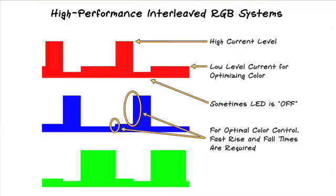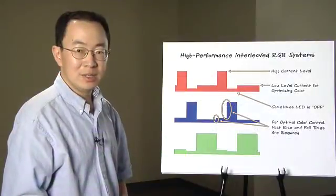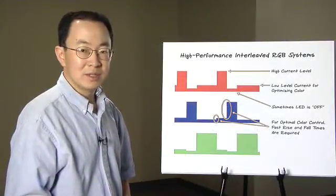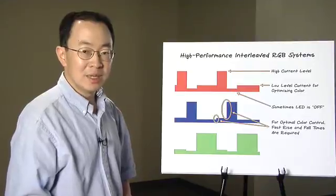In high-performance system, there is a low-level LED current in between off and high. In high-performance system, faster rise time and fall time are required. Both characteristics of high-performance projectors improve color optimization.